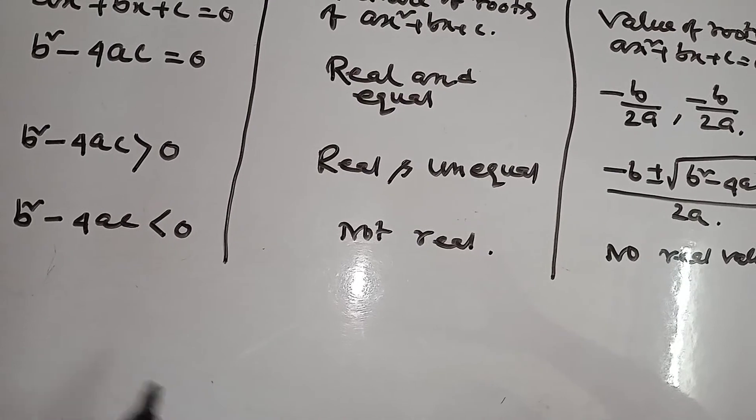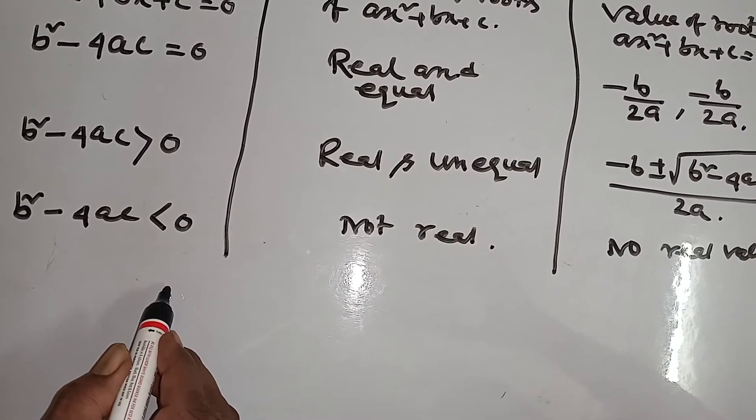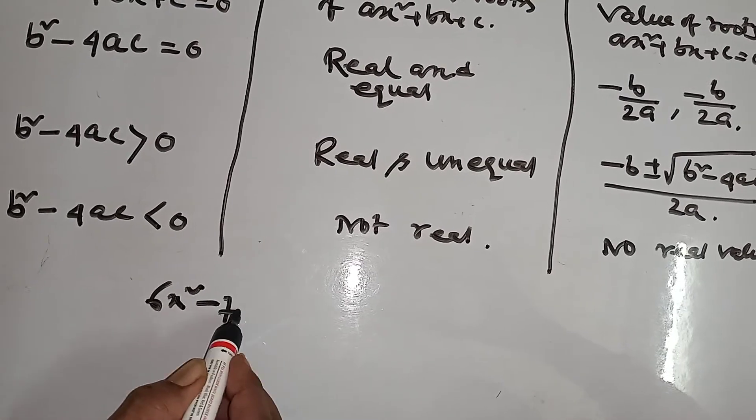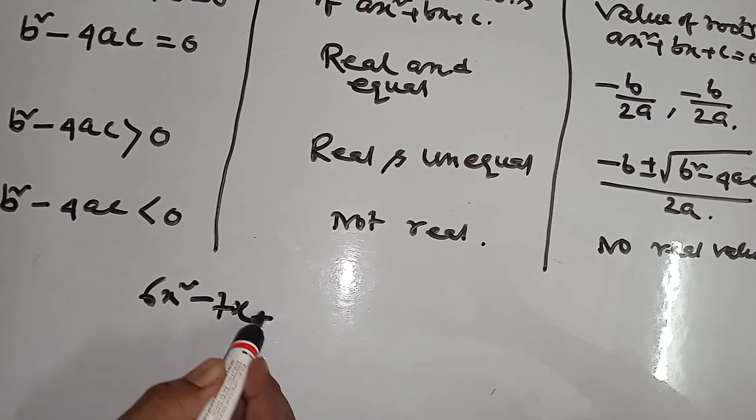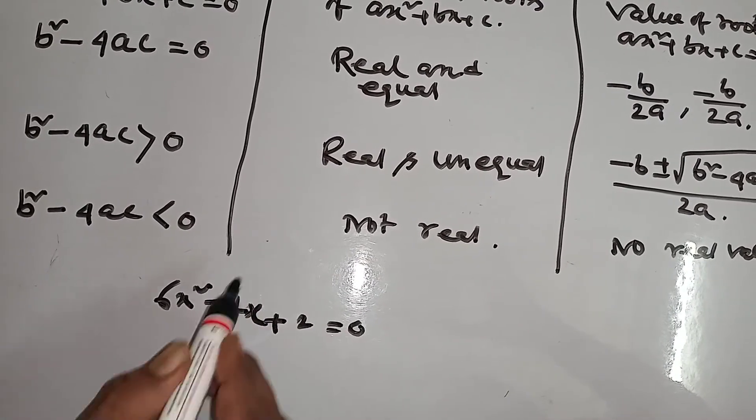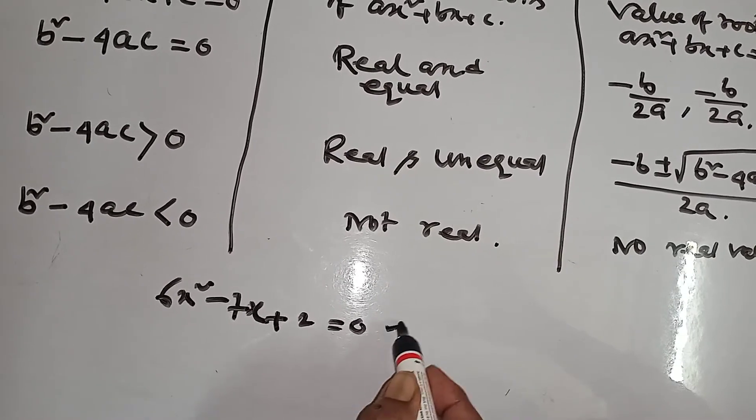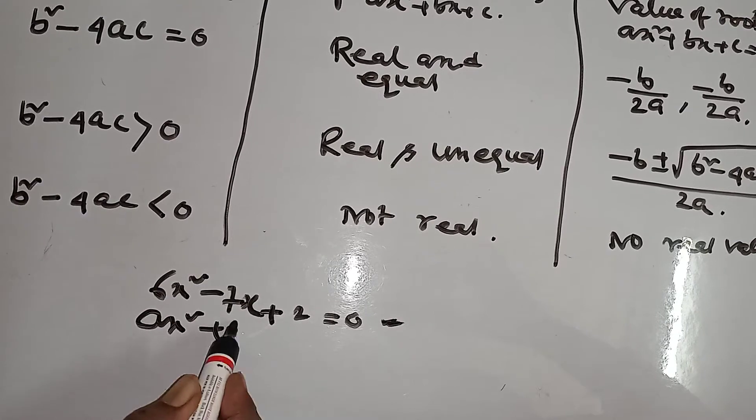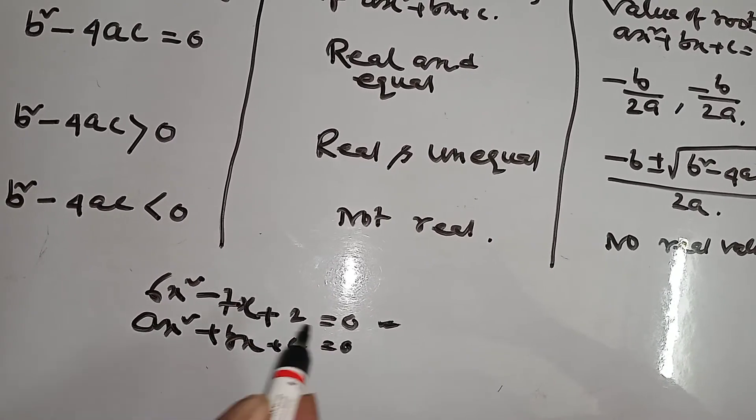Now I am giving one example. 6x squared minus 7x plus 2 equal to 0. Find the nature of roots. For x squared plus bx plus c equal to 0.